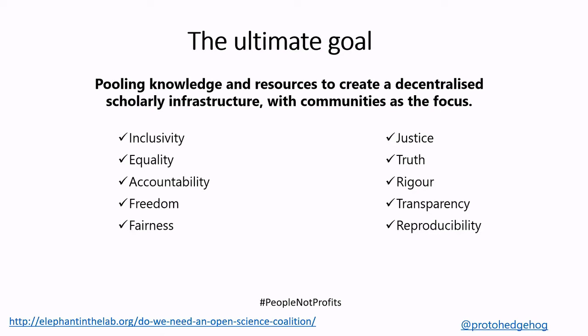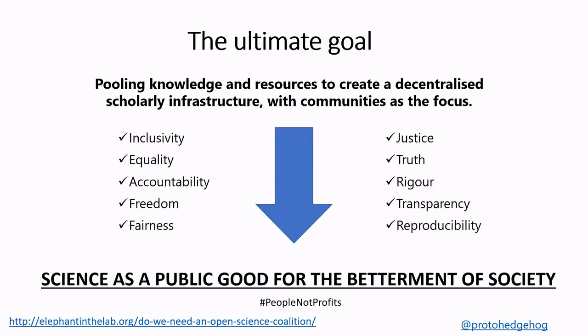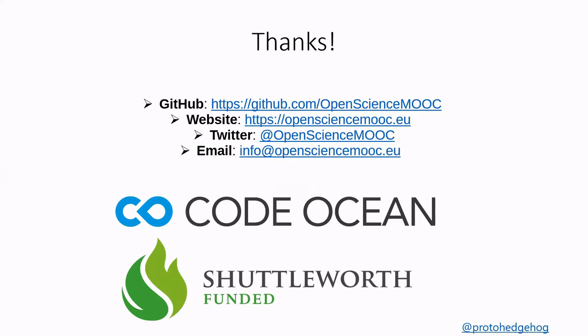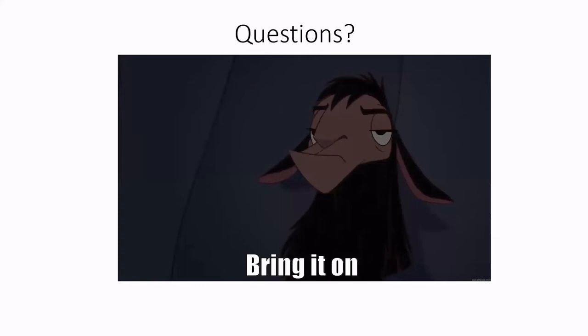The ultimate goal is to create this community, this platform, this network — where we are pooling knowledge and resources within the wider scholarly ecosystem to create a decentralized infrastructure, but with communities and values and principles as the focus. From this, the practices will become inherent to us and research will be better. We can base it on really human elements — inclusivity, equality, accountability, freedom, fairness. My vision is that science will return to being a public good for the betterment of society rather than something controlled by private companies. Thank you all for listening, and I'd be happy to answer any questions.